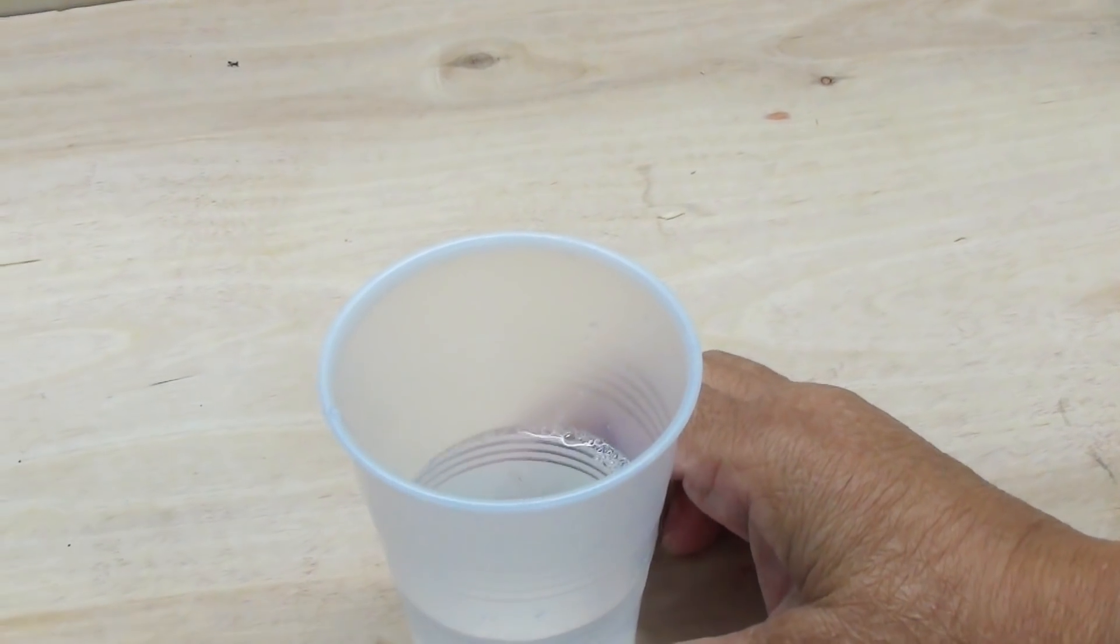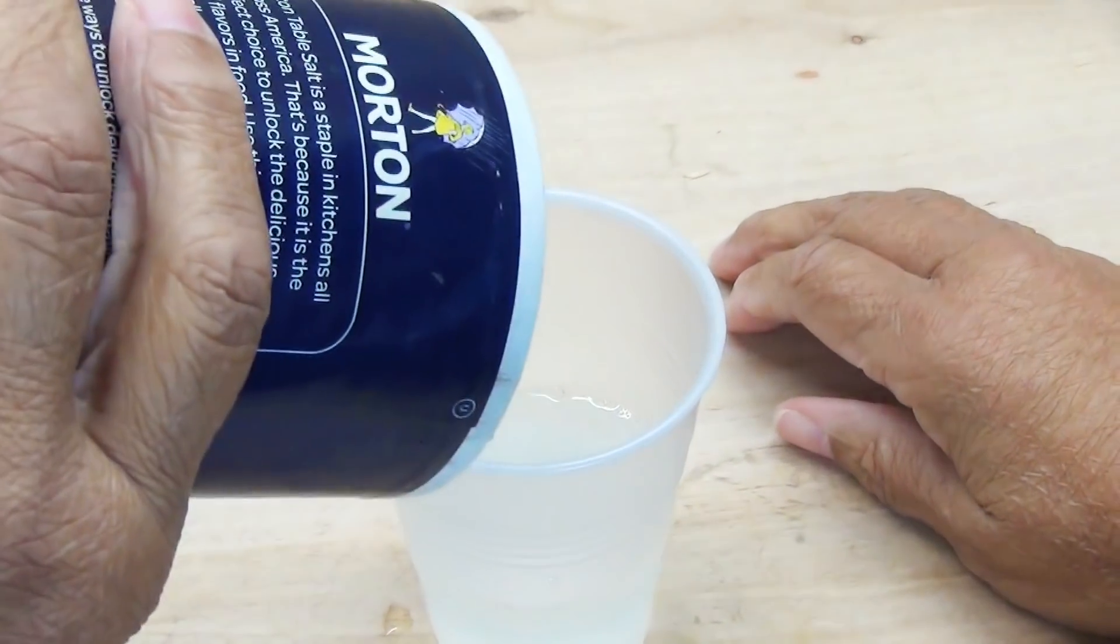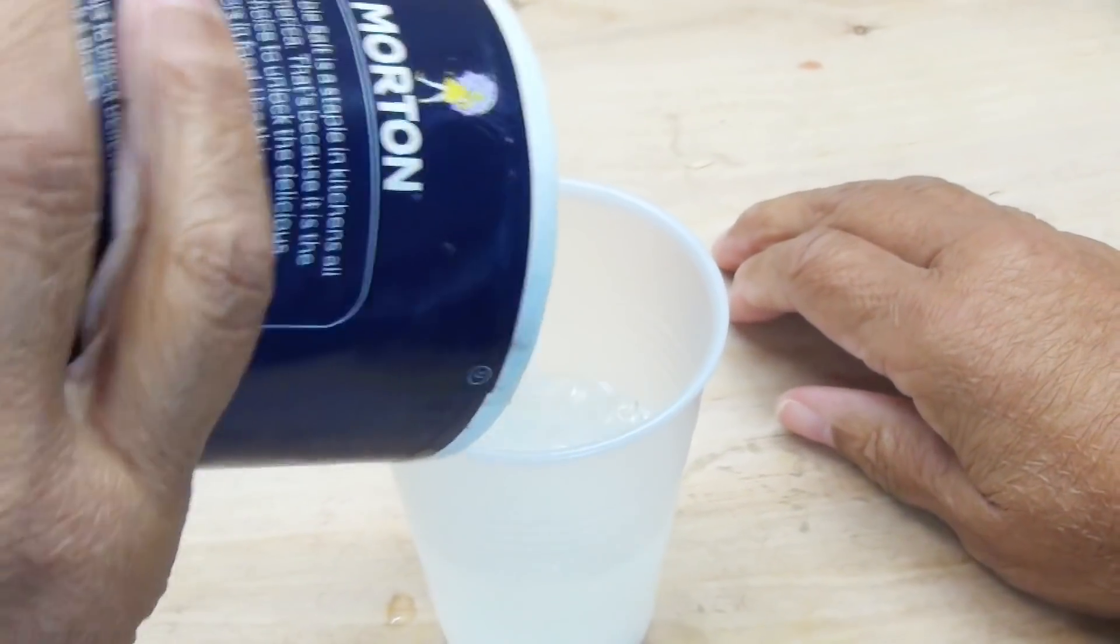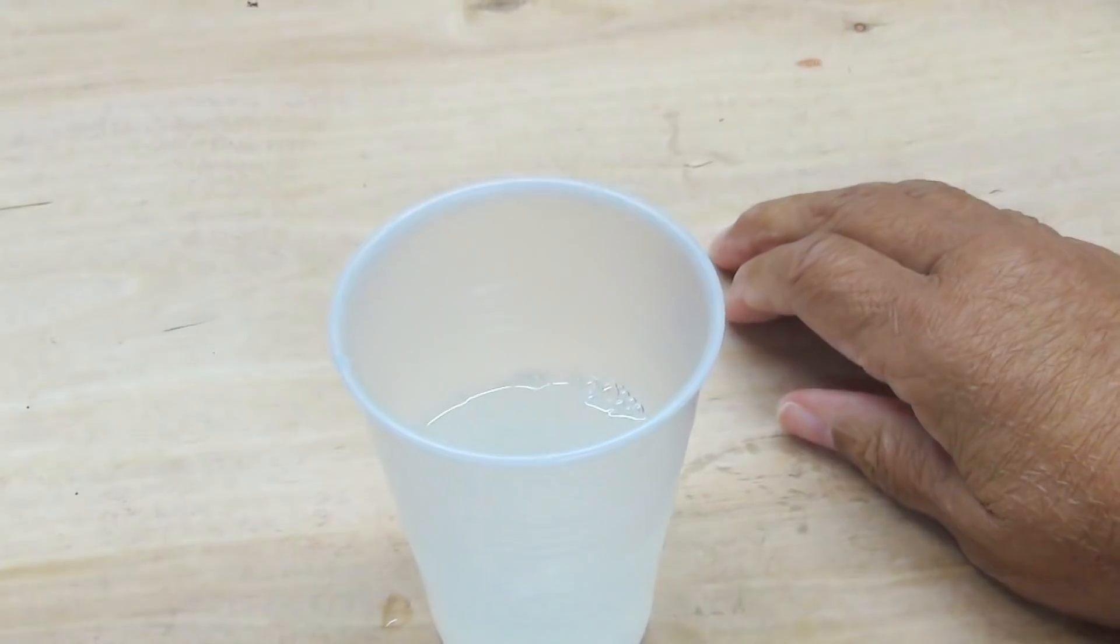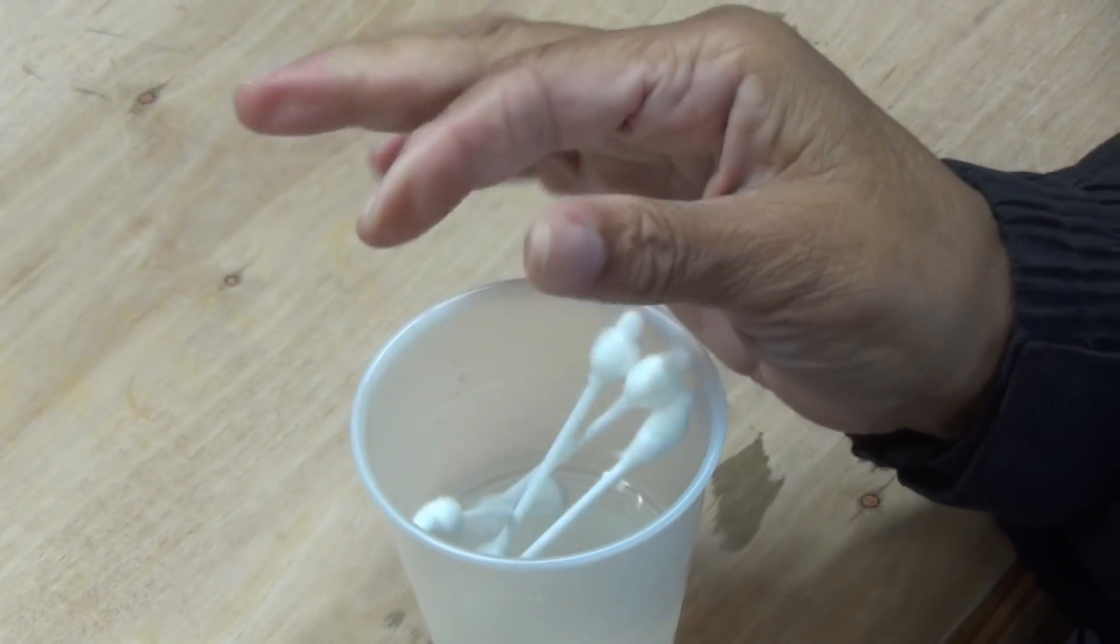Now we're going to add table salt. We're going to add maybe a teaspoon to our vinegar. That's good enough. Now I'm just going to stir it up. Now I'm just going to submerge these in the solution.